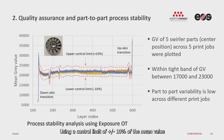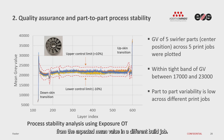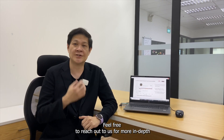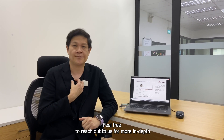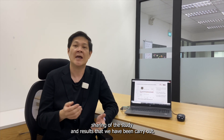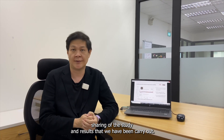Using a control limit of plus or minus 10% of the mean value as an example, the engineer can monitor whether there is process deviation from the expected mean value in the different build jobs. Thank you for watching. Feel free to reach out to us for more in-depth sharing of the study and results that we have carried out.